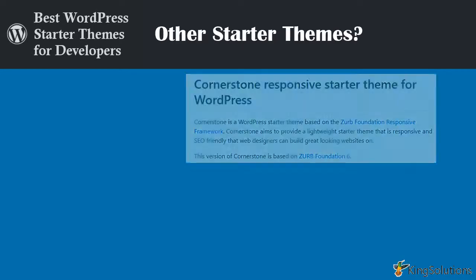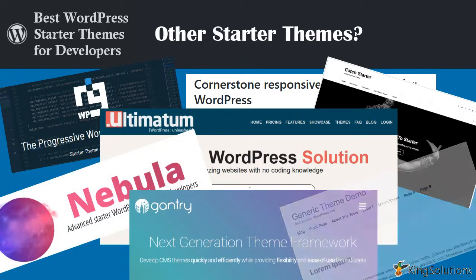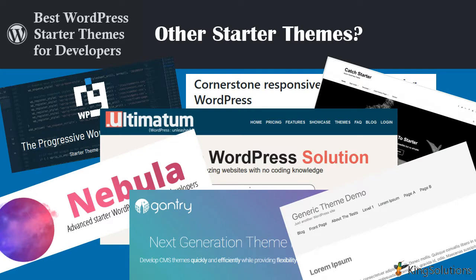Which is the best WordPress starter theme? Well, in my opinion, they are all good, though I personally prefer WP Bootstrap Starter. However, that is just my opinion. There are indeed many starter themes available depending upon your skills and requirements — starter themes such as Catch Starter, Cornerstone, Gantry, Generic, Nebula, Ultimatum, and WP Rig, to name but a few. Using WordPress starter themes in your workflow will help you create a ready-to-go WordPress theme quickly. For this reason, they should be a go-to development tool, regardless of your expertise.